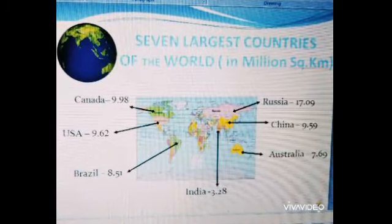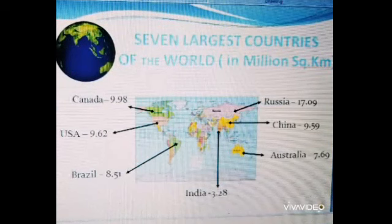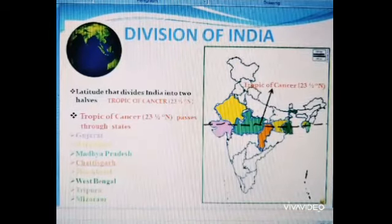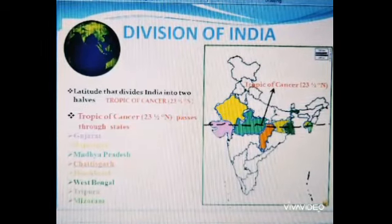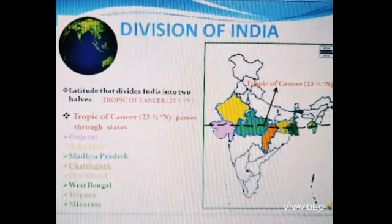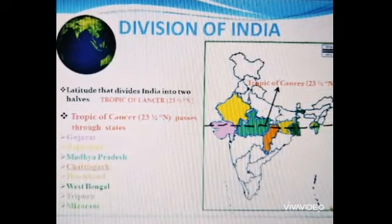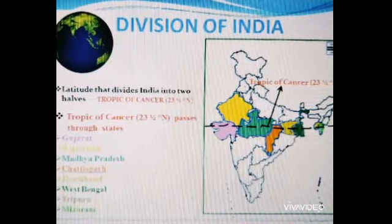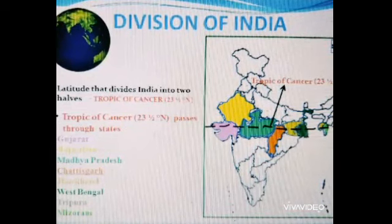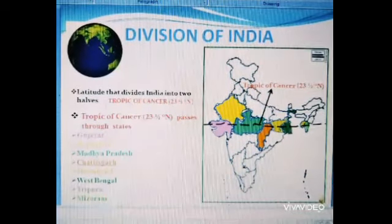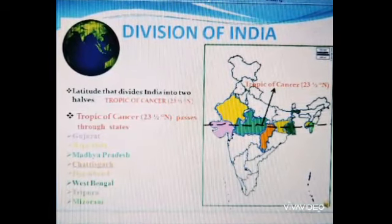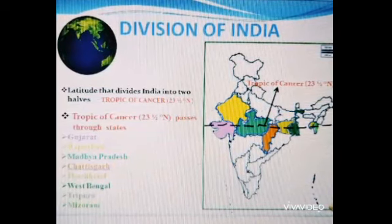Now we will see the division of India. The states through which the Tropic of Cancer passes are: Gujarat, Madhya Pradesh, Chhattisgarh, West Bengal, Tripura, Mizoram and Jharkhand.